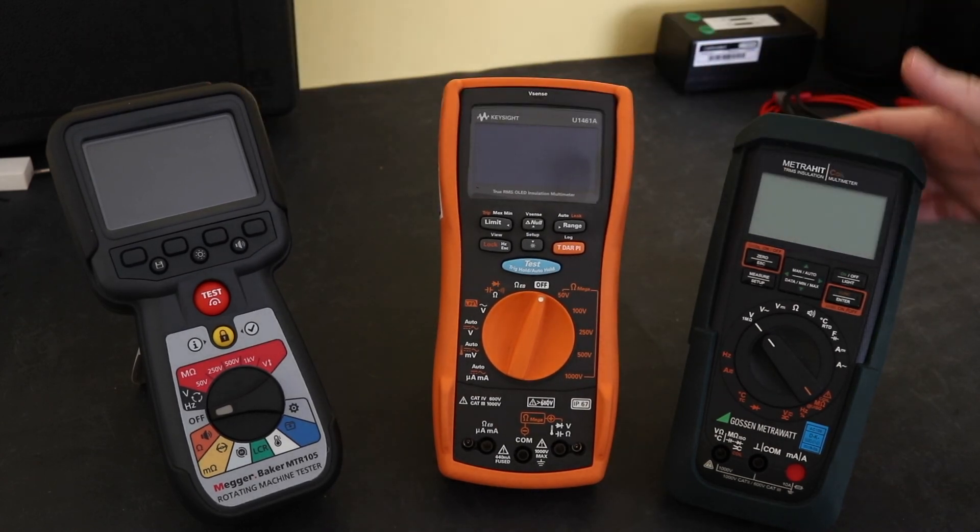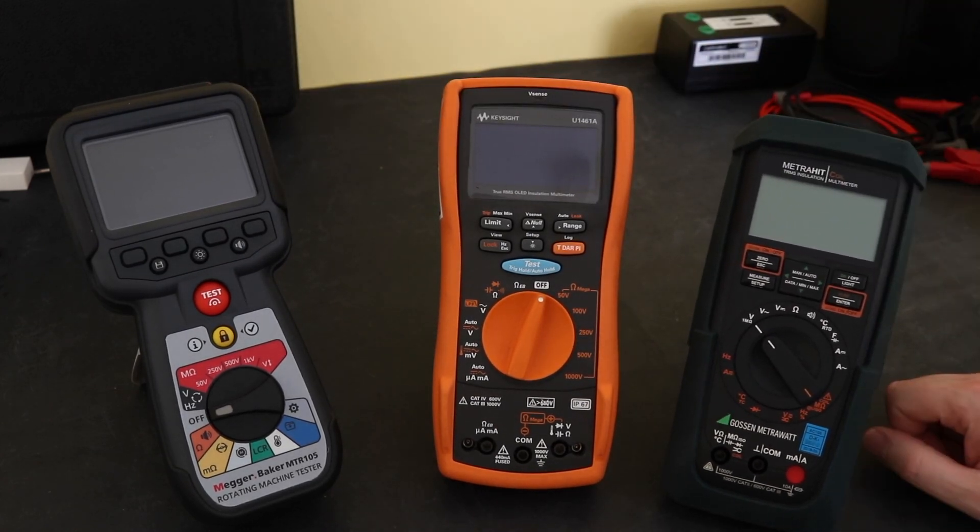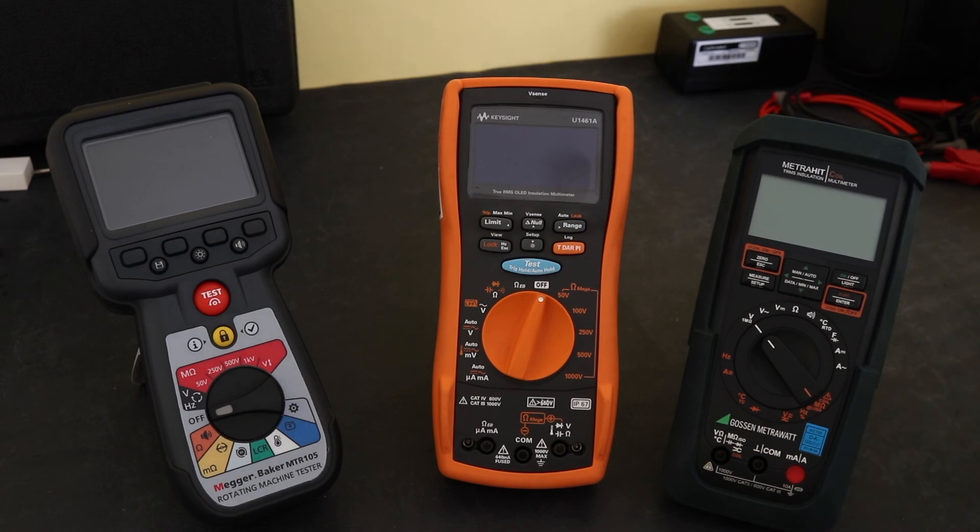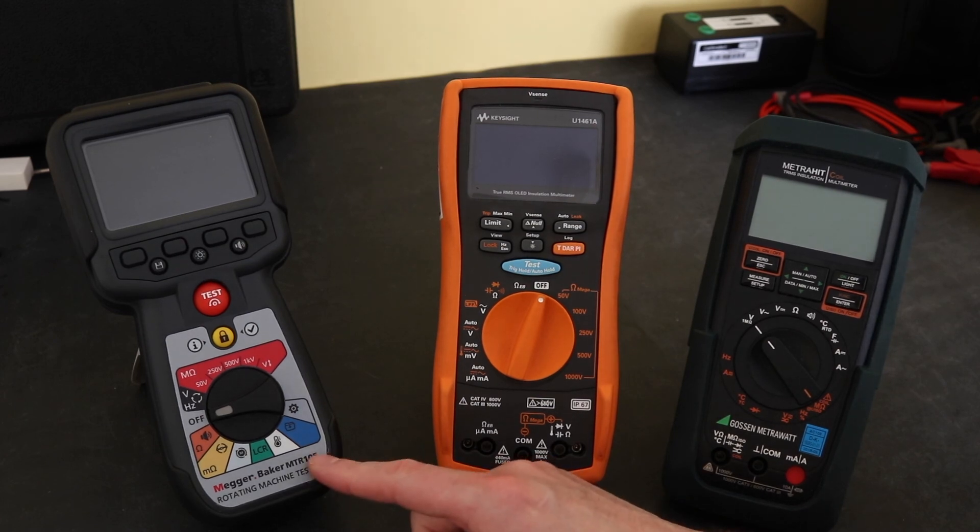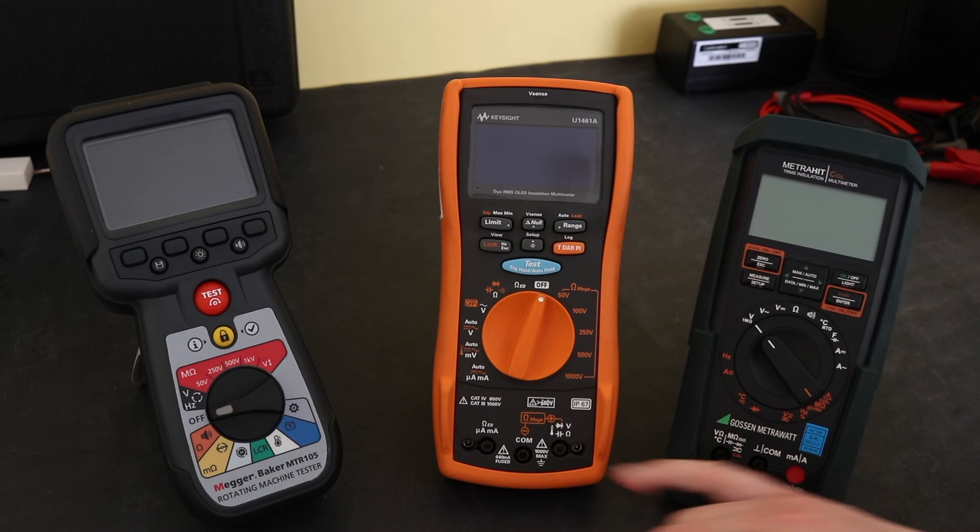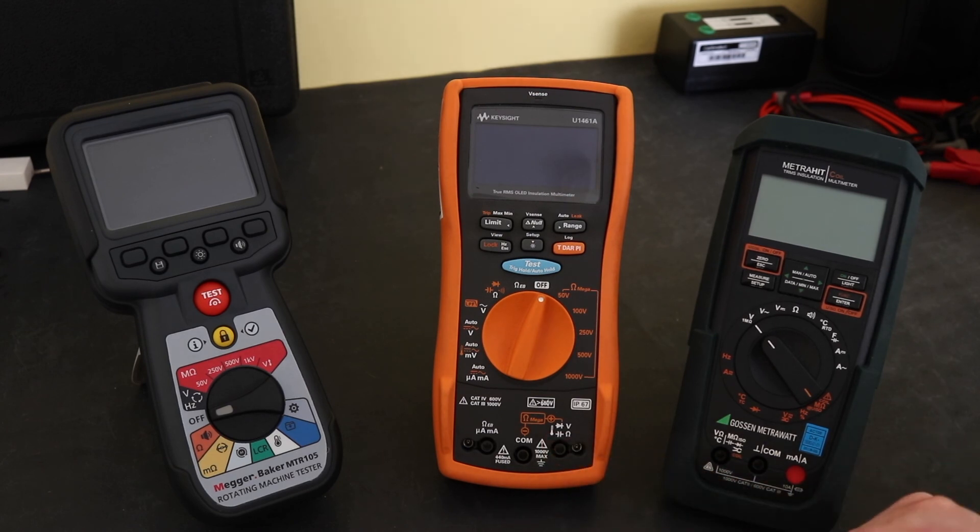Second place three points and third place one point for that. So that wraps up the insulation accuracy testing. Thanks for watching, I hope you found it useful and in the next video on this I'm actually going to go into the insulation test functionality because the MTR105 has quite a few more functions that is not seen on either of these two instruments which are interesting for insulation testing purposes.